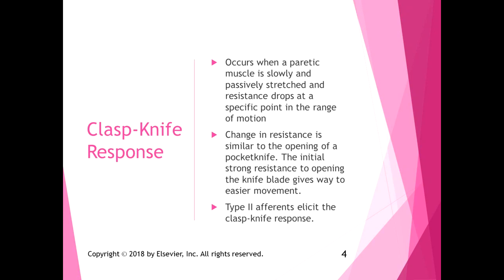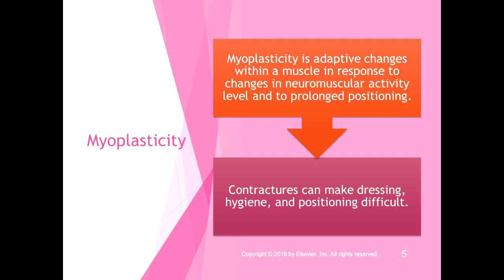With lead pipe rigidity, you meet resistance throughout the range of motion — it doesn't drop off at a specific point. You can think of it as moving a lead pipe, which is why they call it lead pipe versus clasp knife. Clasp knife has resistance that drops at a specific point, while lead pipe rigidity is rigid throughout the entire range of motion.